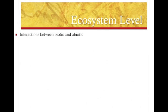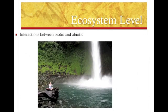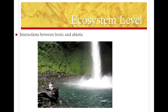So first up, we want to talk about the ecosystem level and the interactions between biotic and abiotic factors. If you look at this picture, you'll see that there are both biotic and abiotic factors — the water flowing, the pH of the water, the temperature of the water, the temperature of the air, how much humidity is in the air. Those are all the abiotic factors.